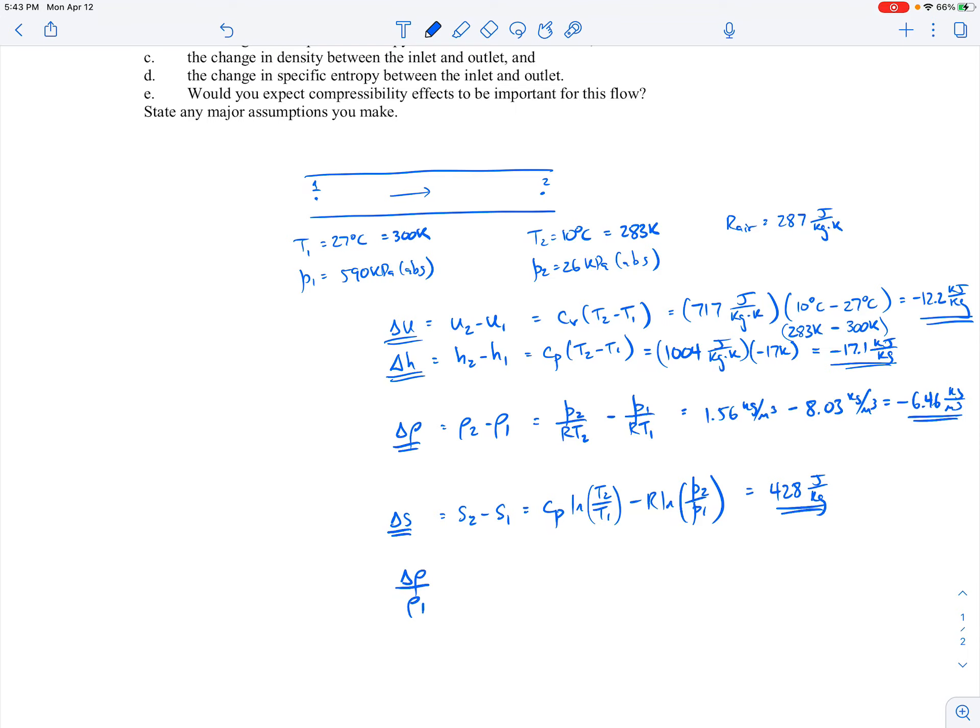And in fact, if you look at that change in density compared to the density that we start with, just to give us a reference—if I tell you that the change in density is 6.5, I don't know whether that's big or not compared to the initial density. If the initial density is 100 kilograms per cubic meter, then that change in density would be small relative to it. So this is why I'm taking the change in density relative to the density I'm starting with to see how big of a change it is. So it would be 6.46 kilograms per cubic meter divided by 8.03 kilograms per cubic meter. And so you see that this is minus 0.805. So the density drops by about 80%, which is very significant. The change in density relative to what we started with decreases by about 81%. So compressibility effects would certainly be important here.